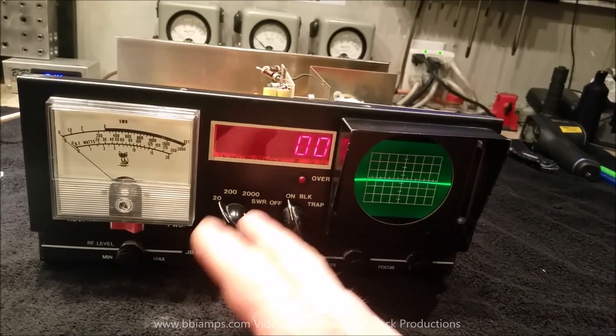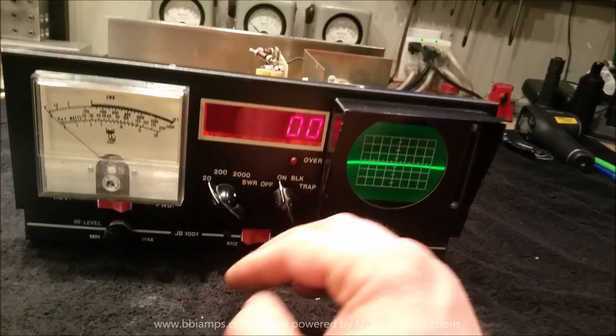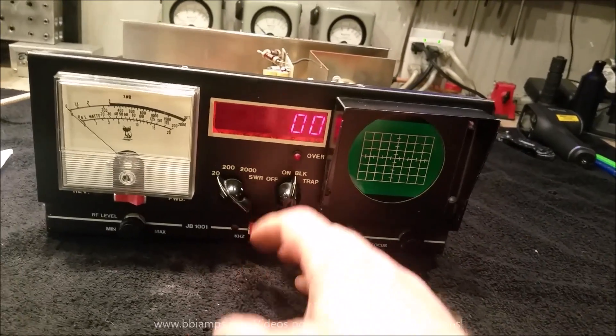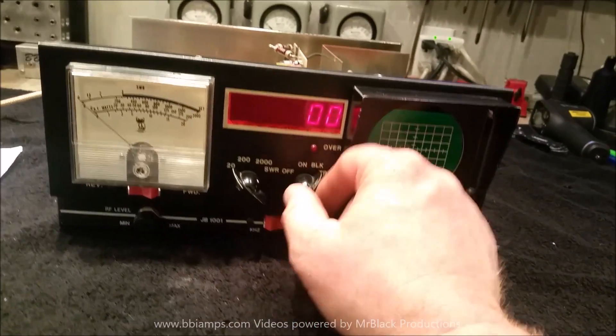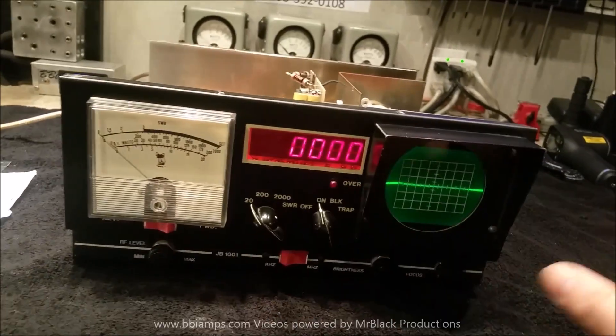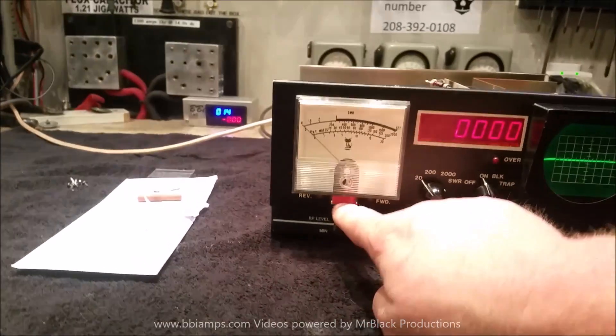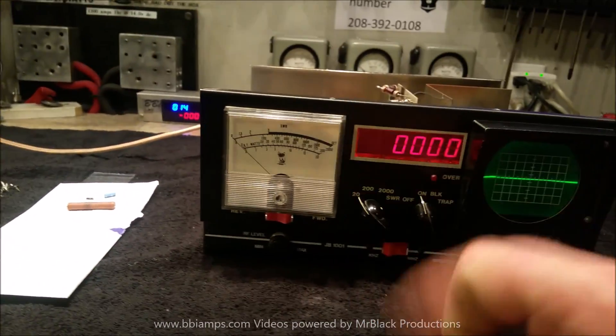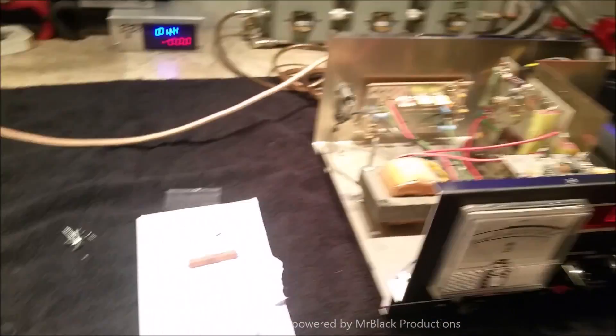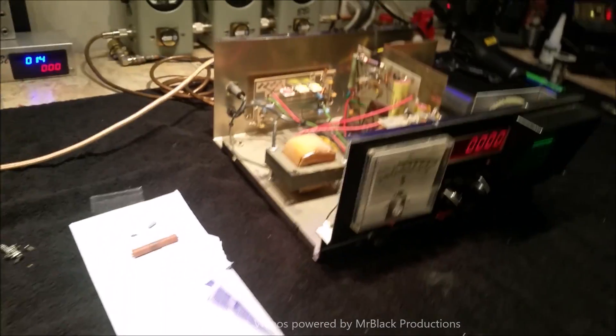So I went ahead and cleaned all the contact points on the 20, the 200, the 2000 SWR, on the Black and the Trap. Got that all working again, my friend. Your forward reflex switch is all cleaned up and is now actually working again.